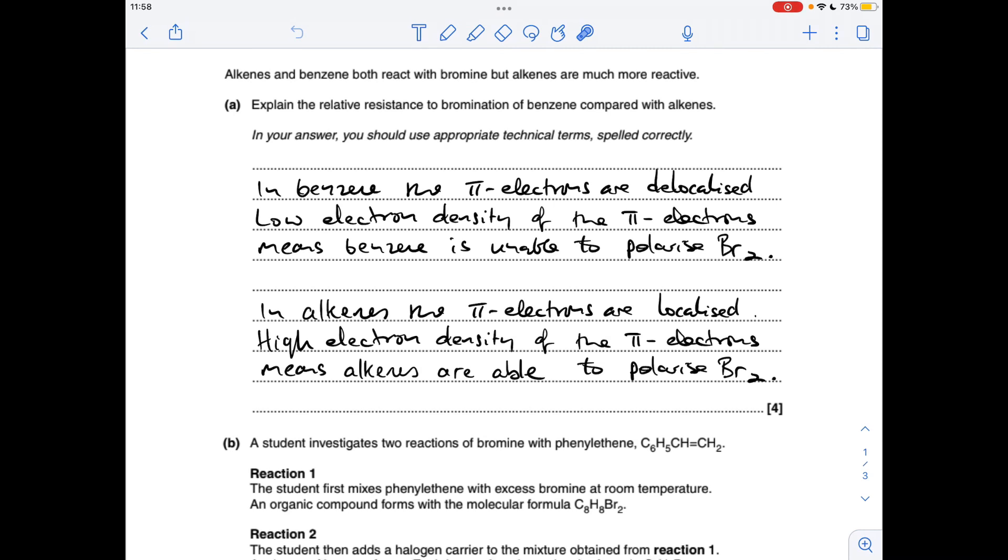Part A: Why is benzene resistant to bromination whereas alkenes do it readily? It's all down to the nature of the pi electrons. In benzene, the pi electrons are delocalised, so the low electron density of the pi electrons means benzene is unable to polarise the bromine molecule.